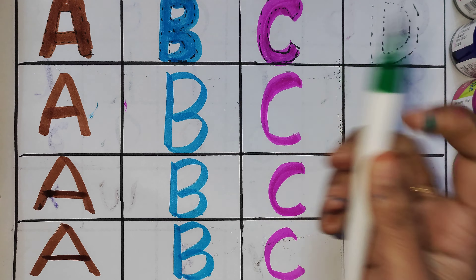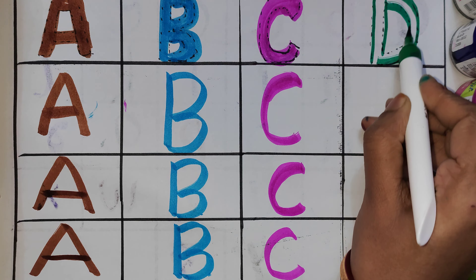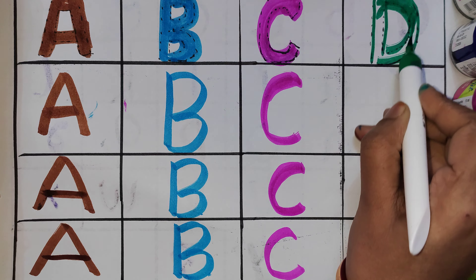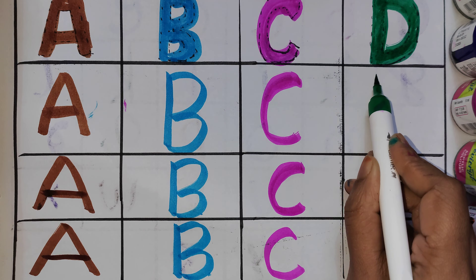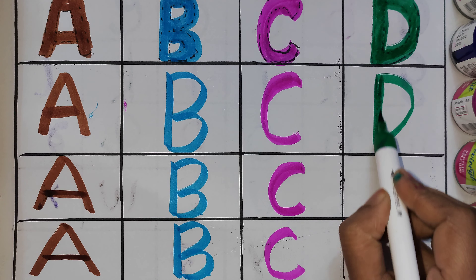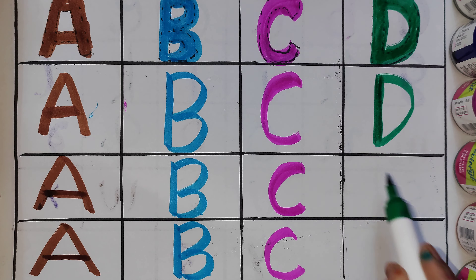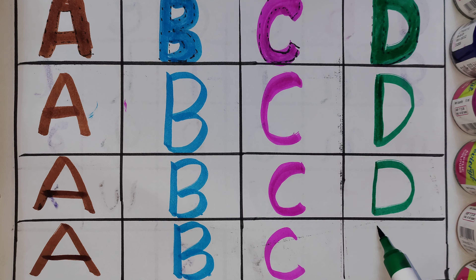Green colour. D for Dog. D for Donkey. D for Doctor.